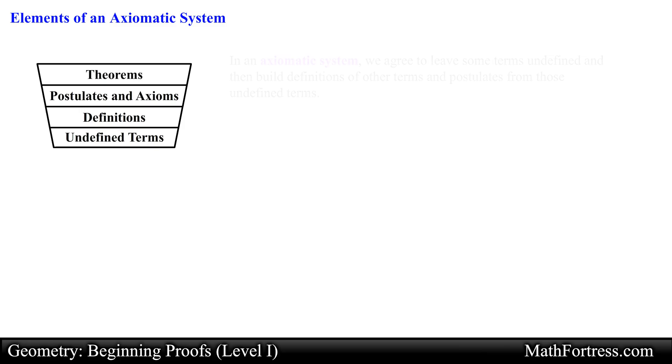Geometry is based on an axiomatic system. A modern axiomatic system begins with a small set of undefined terms and builds through the addition of definitions and postulates to the point where many rich mathematical theorems can be proved. In an axiomatic system we agree to leave some terms undefined and then build definitions of other terms and postulates from those undefined terms.